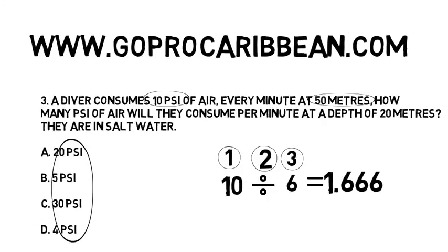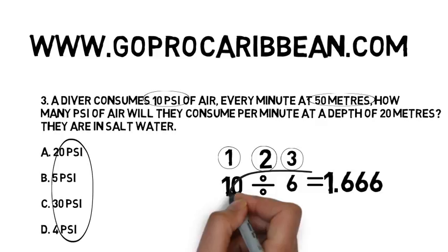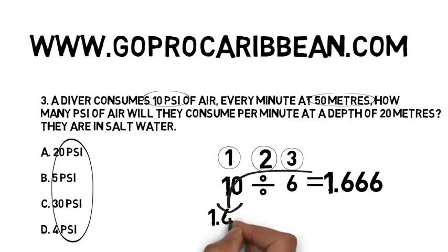So round two — what are we going to do? Well now we have our surface air consumption rate, we can enter that in to step one of round two: 1.66 recurring psi per minute at the surface.